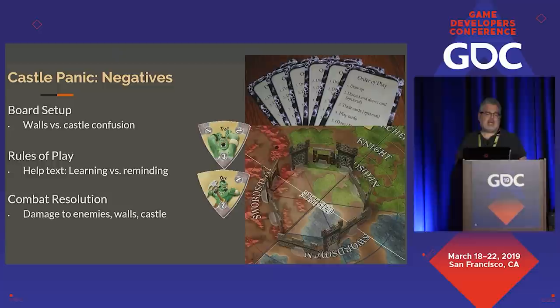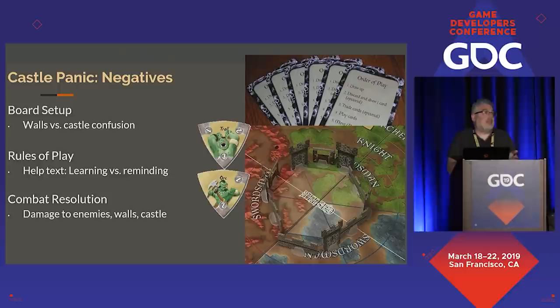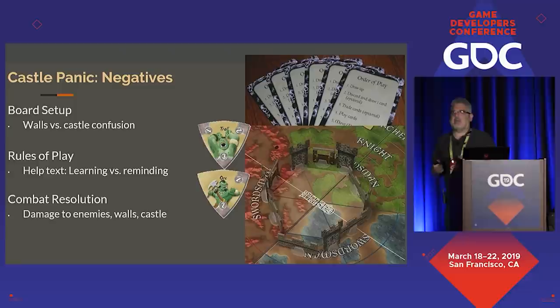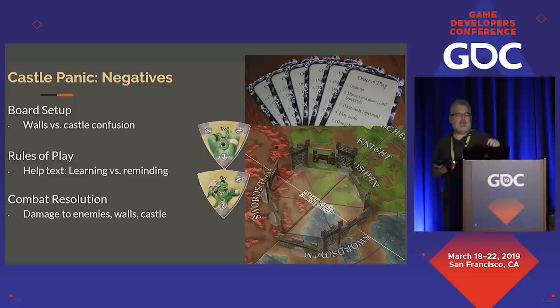The rules of play: the help texts on the board and player reference cards were vaguely worded — more for reminding than for learning. They had statements like 'draw up' — how many cards do I draw? How many am I supposed to have? 'Play cards' — how am I supposed to play them, to attack or do other things? 'Move monsters' — how many do I move, all of them? Another problem was combat resolution: you've got trolls with values one, two, and three, and orcs with one and two — but what do those numbers mean? Are they hit points? Strength? How much damage they do? Both?